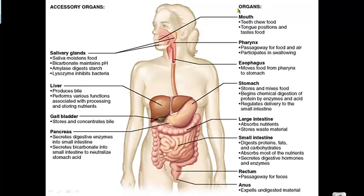Food is first ingested into your mouth. Your teeth chew up the food — that's physical digestion. Your tongue rolls it around — also physical digestion. Your salivary glands — there are three: the sublingual, sub-maxillary, and parotid — release saliva and enzymes into your mouth to help break down the food, which is chemical digestion.